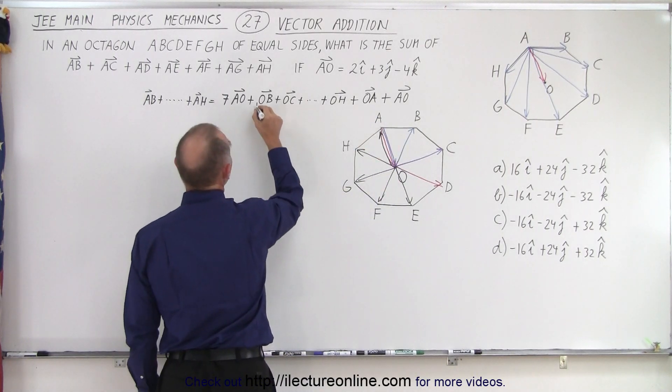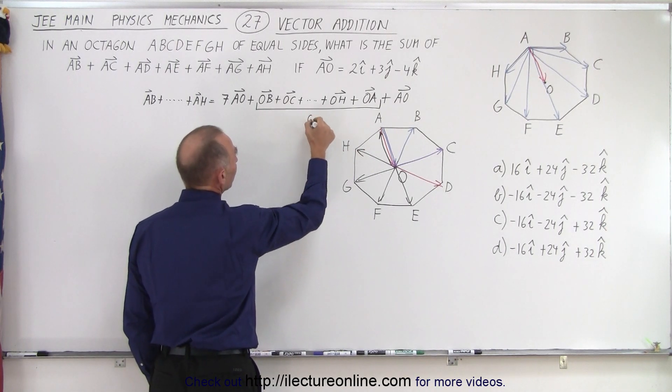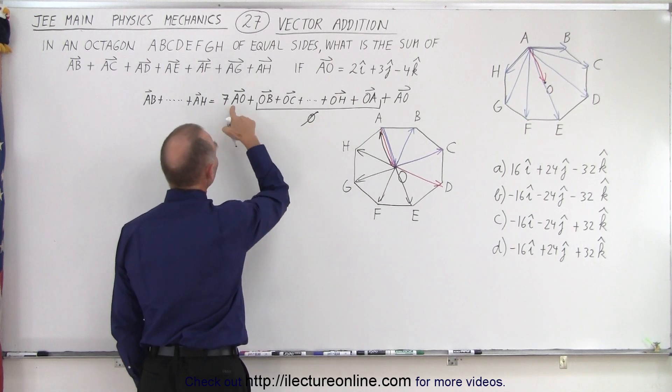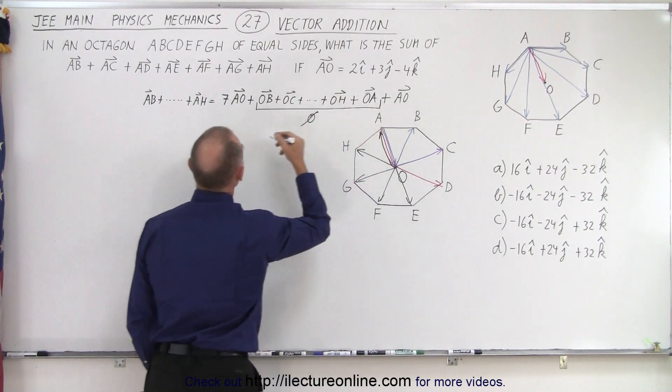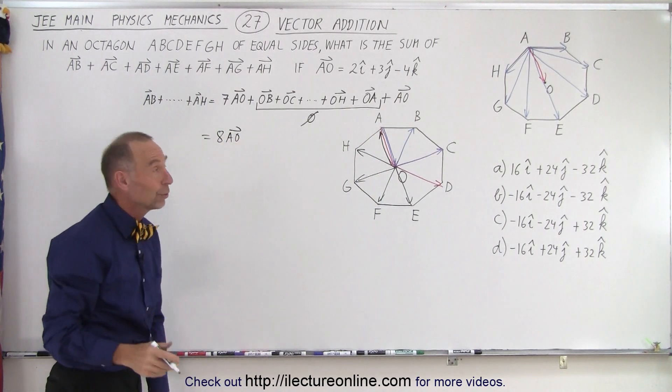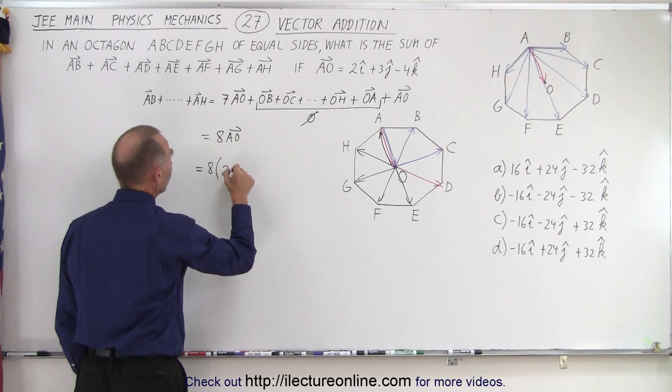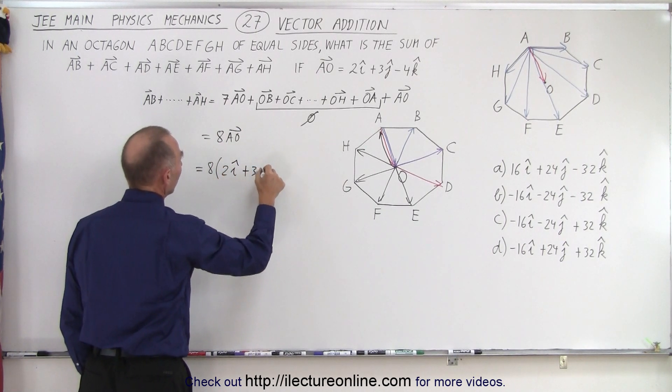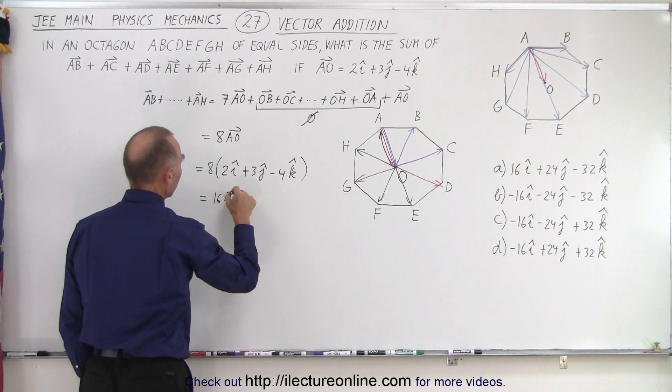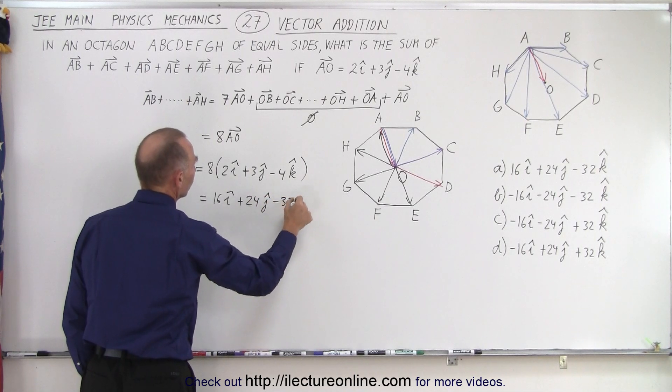Notice if I add this vector, but then I add this vector on top of that, these two vectors added together add up to zero. Because that's the negative of this vector. But if I then look at these vectors right here, I now have eight of them. Those add up to zero. Now, I have seven AOs plus another AO, so that means that this is equal to eight times the vector from A to O. And all I have to do is multiply that times eight, so this is equal to eight times 2I plus 3J minus 4K. And so that's equal to 16I plus 24J minus 32K.